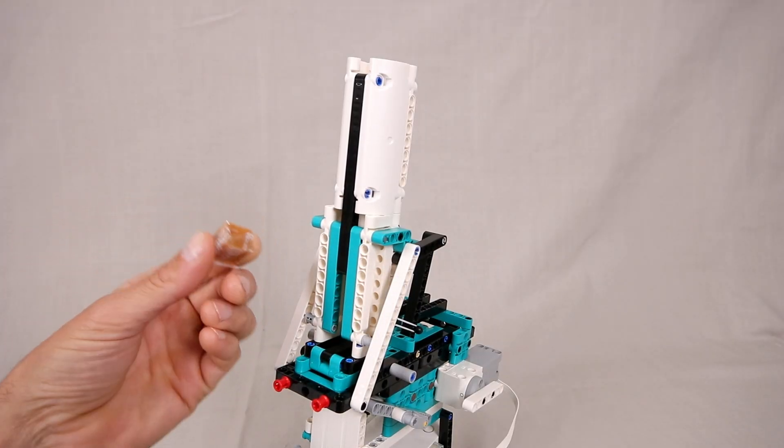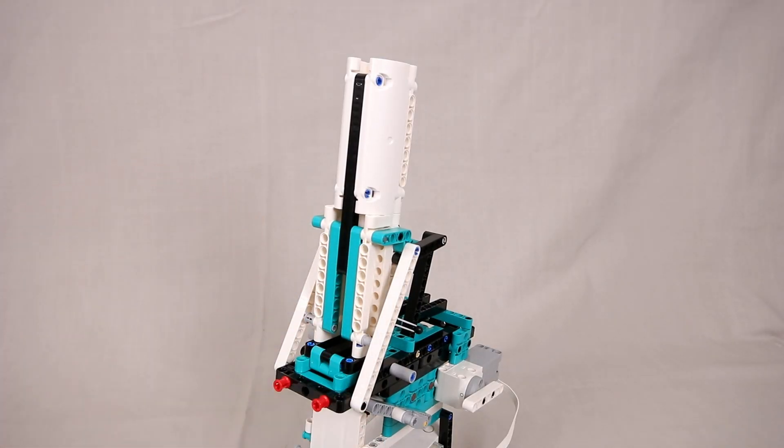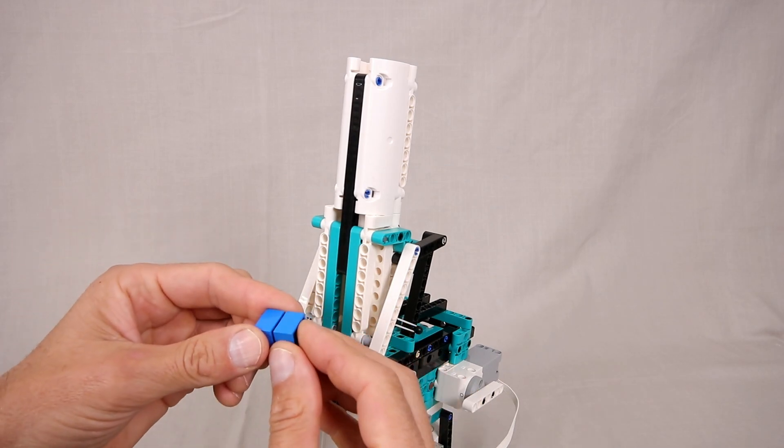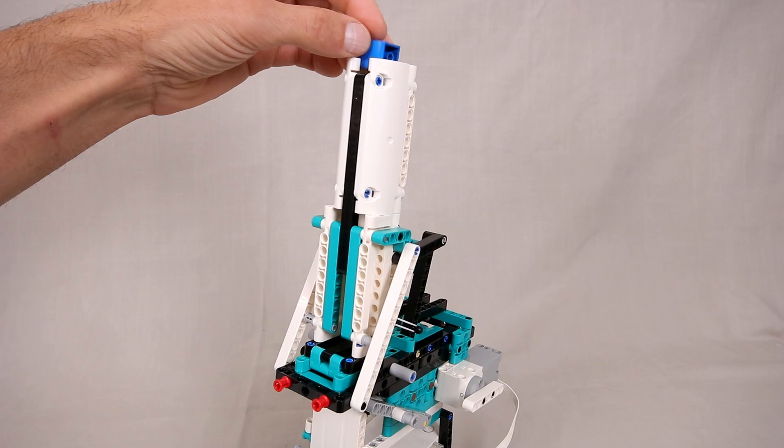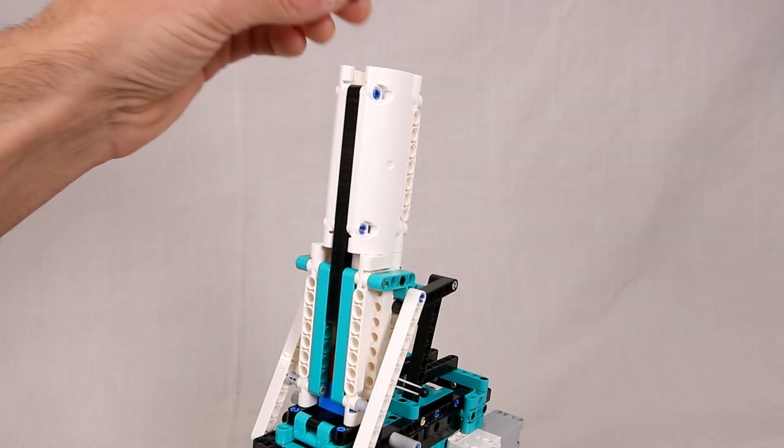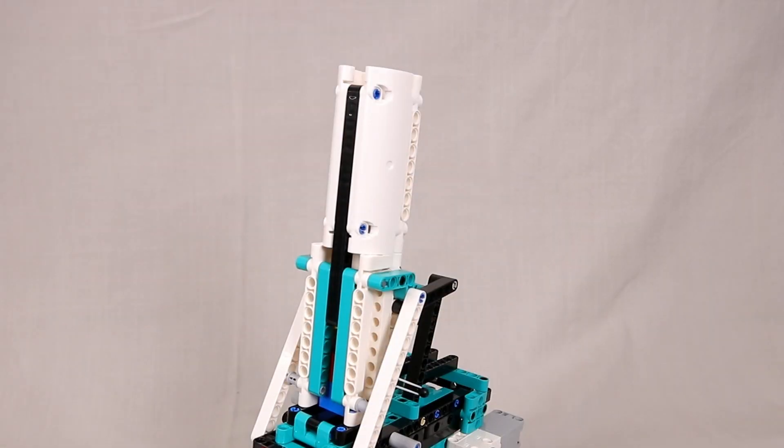Of course if you do build it you don't have to use these creamy caramel candies as ammunition. Pretty much anything that fits in the feed system will work. In fact two stacked 2x2 bricks actually works quite well. I've even had some success launching these tiny little space babies though they do not stack very well so it's best to separate them with some 2x2 bricks.